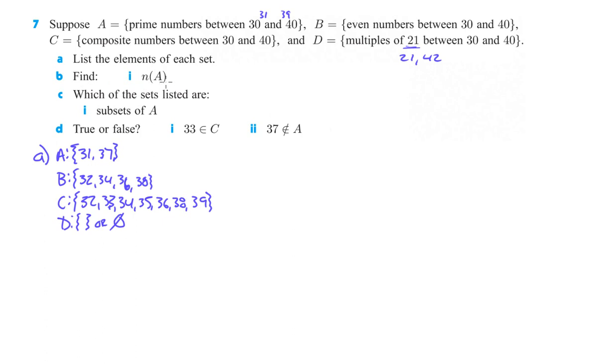For part B, find the n of A, number of elements in A. There's two. Which of the sets listed are subsets of A? So which of these would fit into A? That doesn't, that doesn't, but the empty set fits into everything. So subsets of A would be set D. And we'd also have to include A as well, because A is a subset of A. It's not a proper subset, but it is a subset. Because remember, proper subset, the two sets cannot be equal to each other, but a regular subset you can.